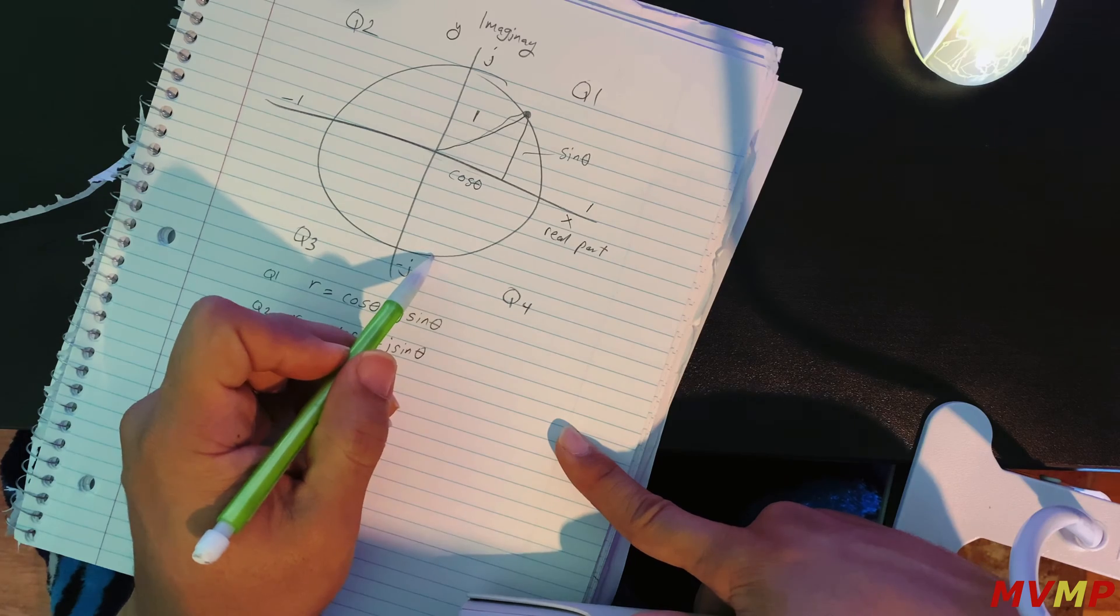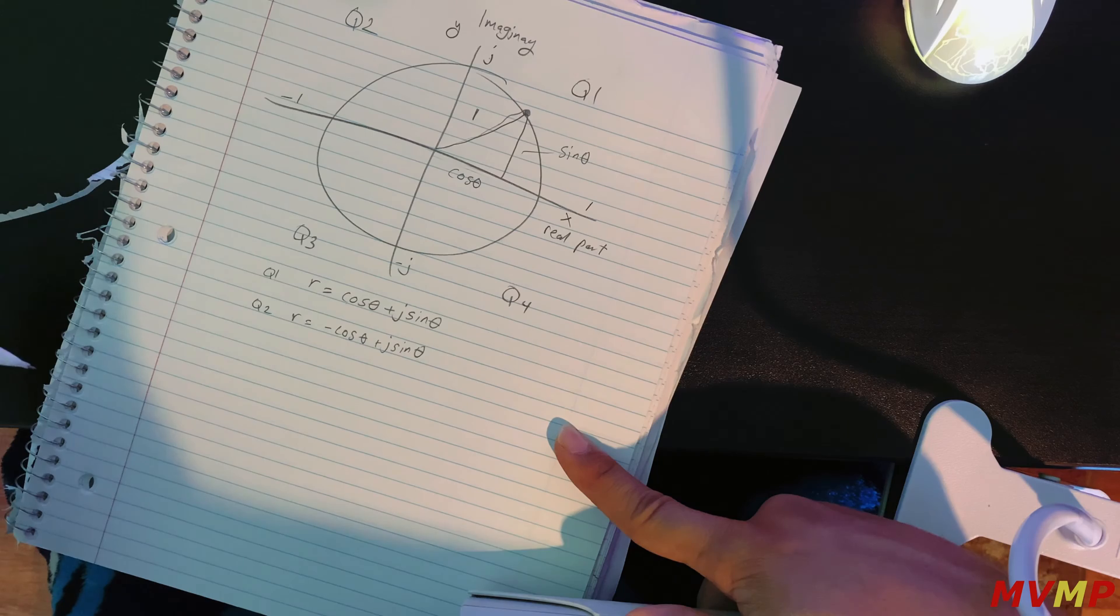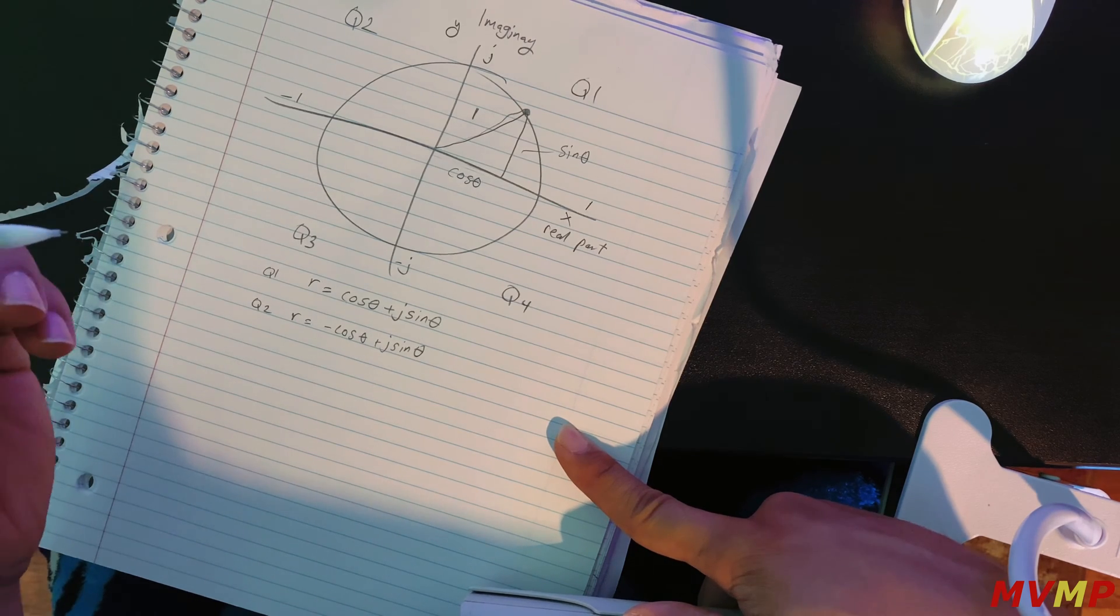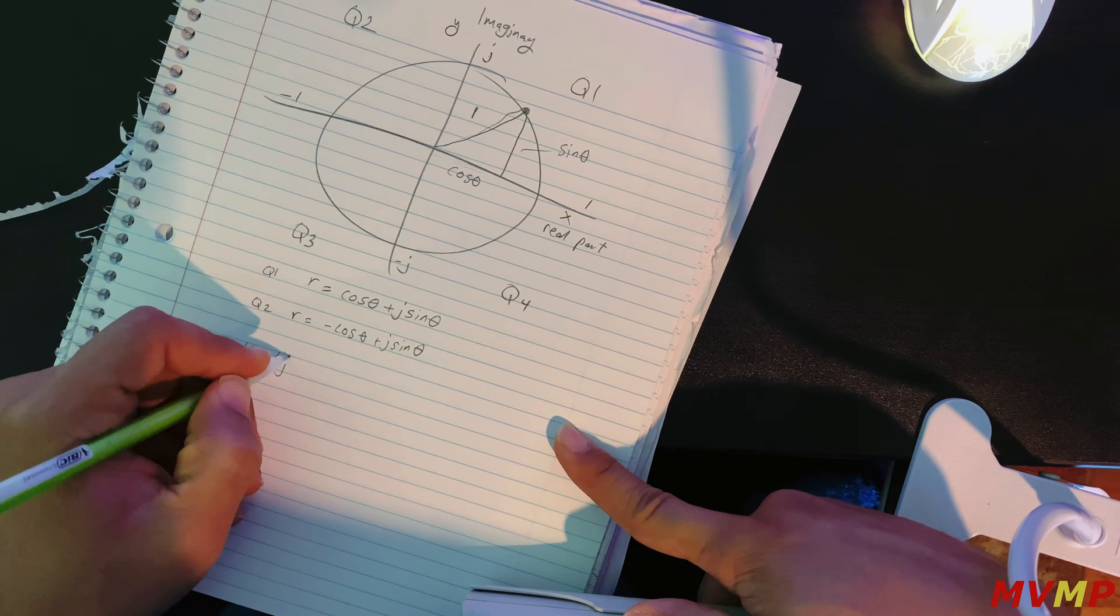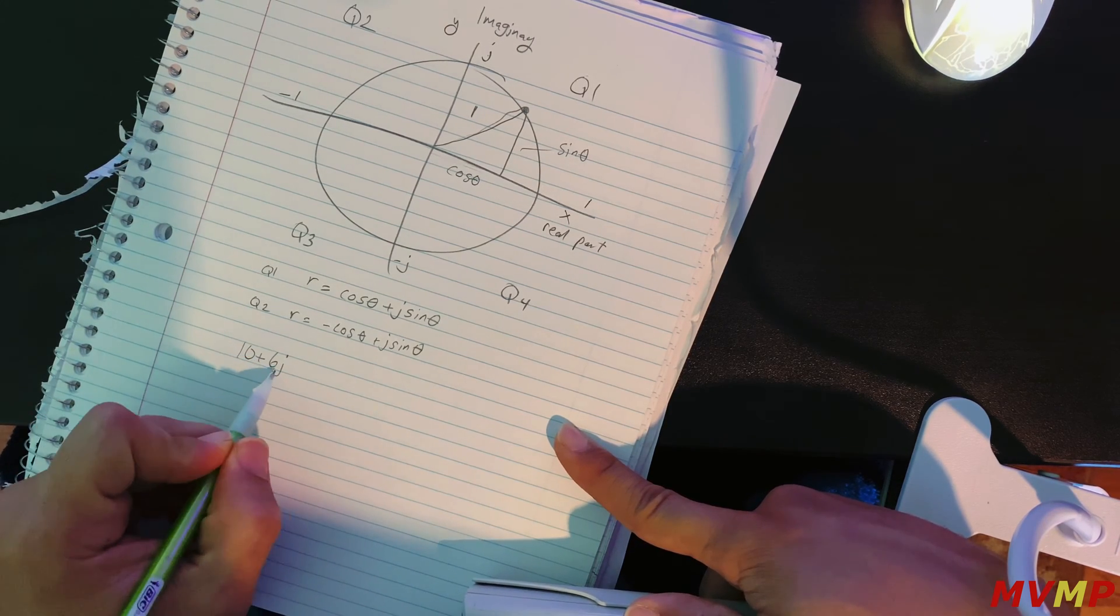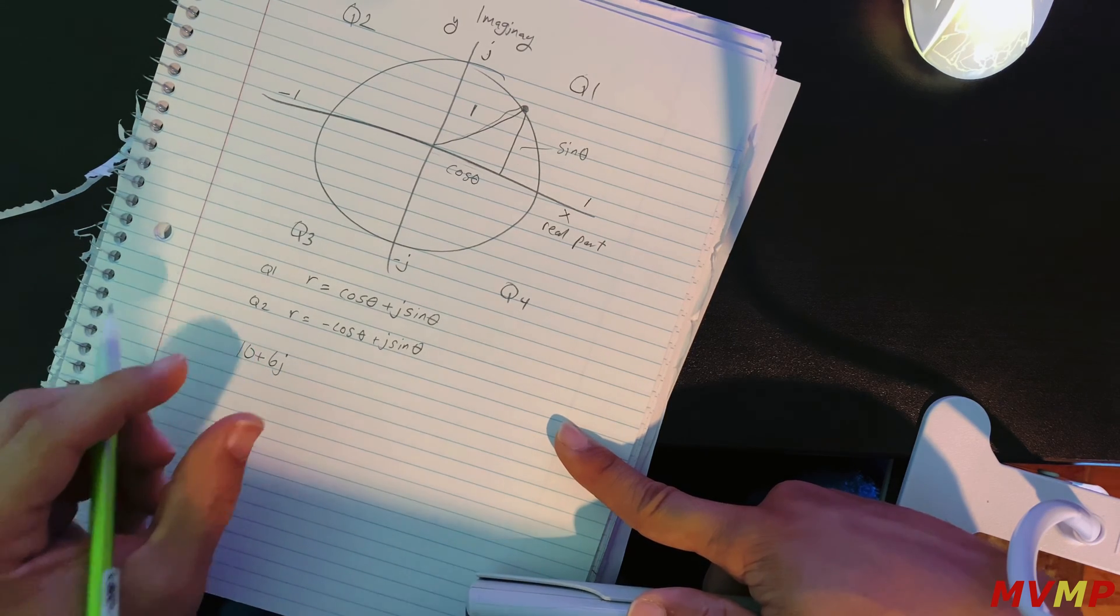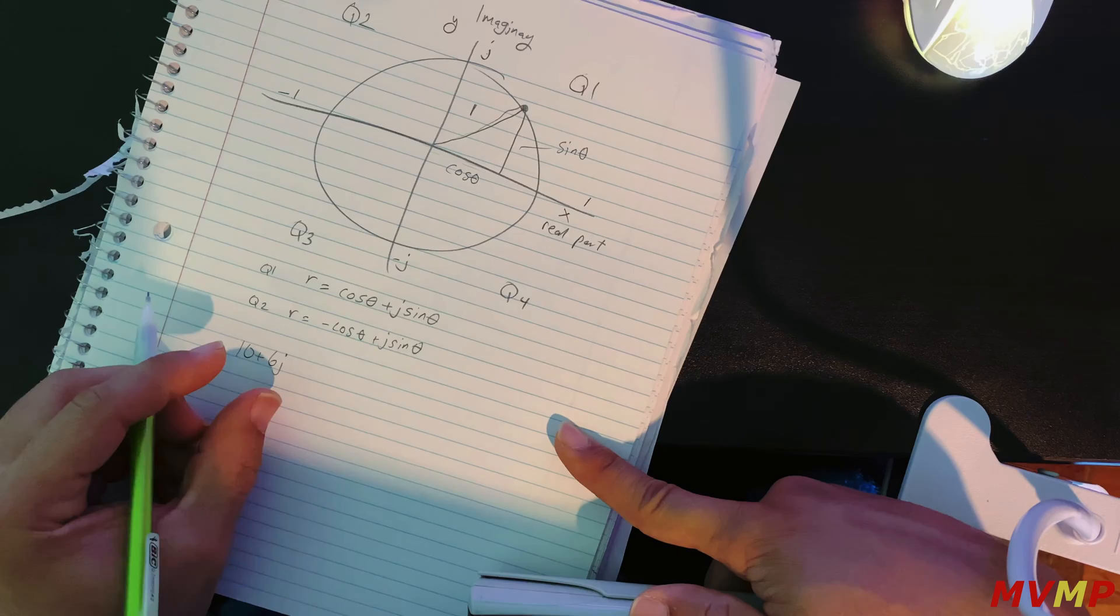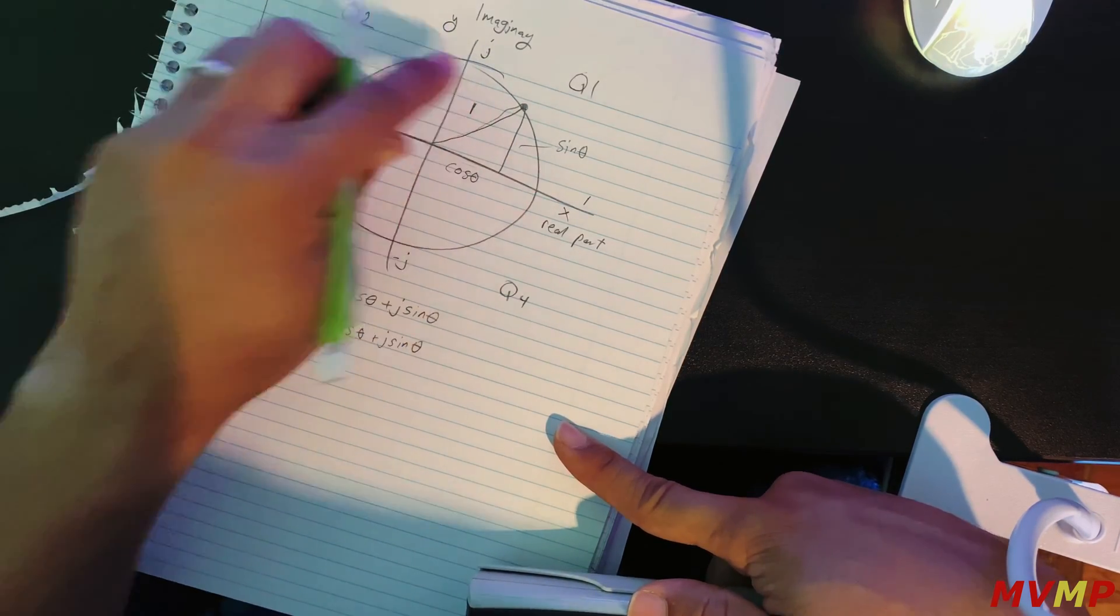So that's how you know that if you're given an expression and you wanted to decide on, let's say you're given 10 plus 6J. Now 10 plus 6J you'll notice that both the real and the imaginary are positive. So you are expecting before you turn this to polar, you're expecting the angle to be in the quadrant one between zero and 90.